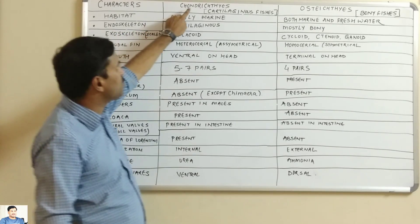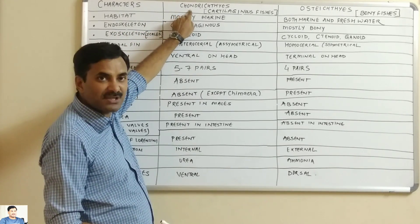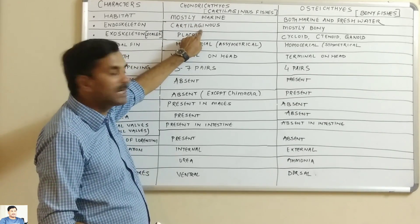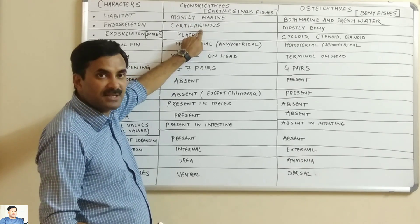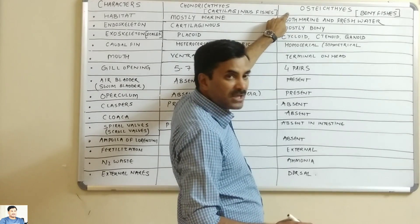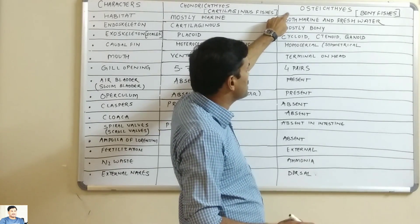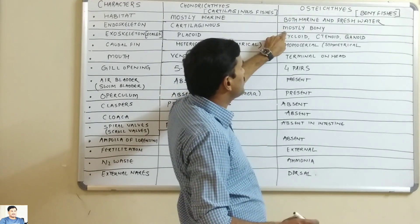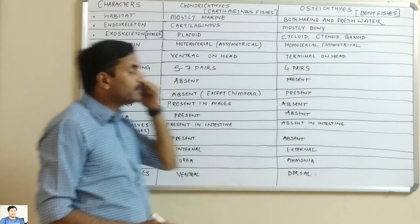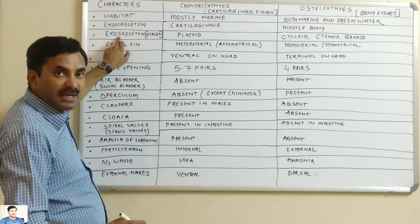The second point is endoskeleton. As the name Chondrichthyes indicates, their endoskeleton is made up of cartilage. While the name Osteichthyes indicates bony fishes, meaning their endoskeleton is bony.